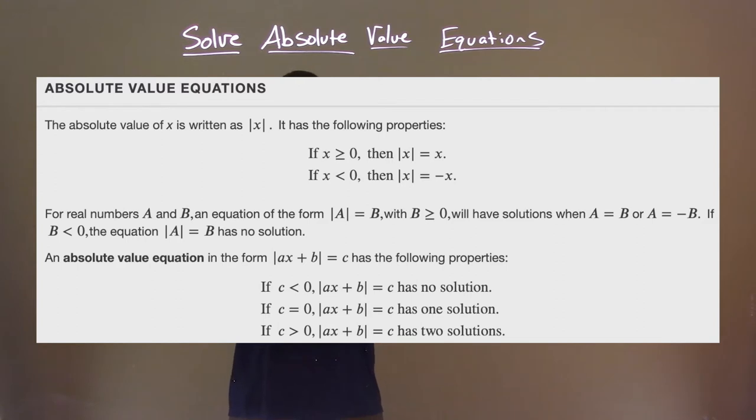If c equals zero, then absolute value of ax plus b equals c has one solution. And if c is greater than zero, can you guess it? Absolute value of ax plus b is equal to c has two solutions.